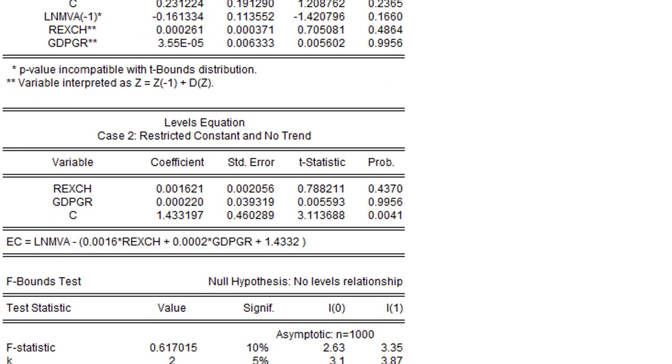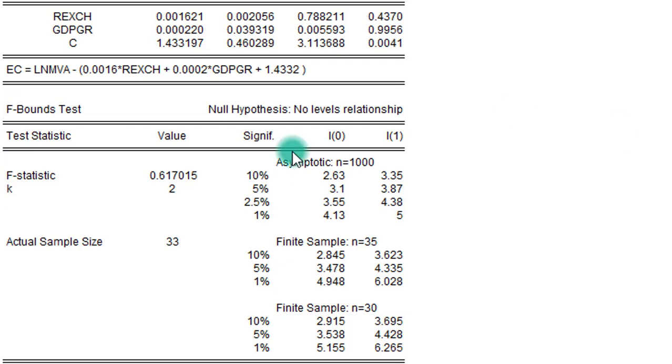So on the screen is the result for the bounds test. We are only interested in this result from here downward. This is our focus. And remember the decision criteria, that once the value for the F is lower than the I(0) bound, we cannot reject the null hypothesis of no cointegration. But if the F value is higher than the values on the I(1) bound, we reject the null. But since we only obtained 0.617, which is clearly lower than the I(0) bound values, in this case, we cannot reject the null hypothesis of no long run relationship.